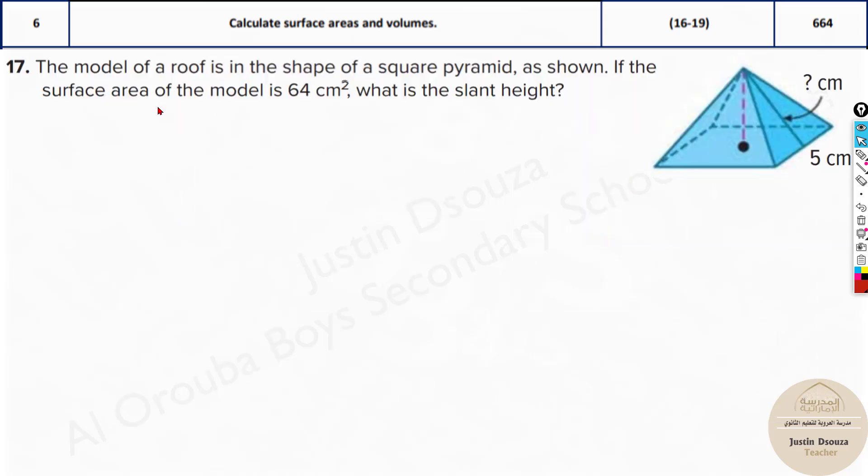We will look into a problem. The model of a roof is in the shape of a square pyramid as shown. If the surface area of the model is 64 square centimeters, what is the slant height? They are not asking for surface area or volume, they are asking for the slant height.